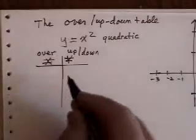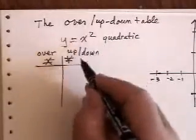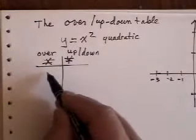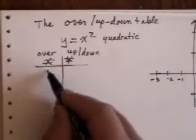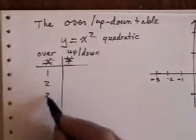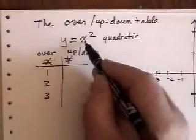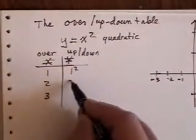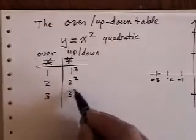Okay, so I take my equation, y equals x squared, and I pick some x numbers. Like, say I go over 1, over 2, over 3. Then, since it's x squared, I'm going to go up 1 squared, up 2 squared, up 3 squared.